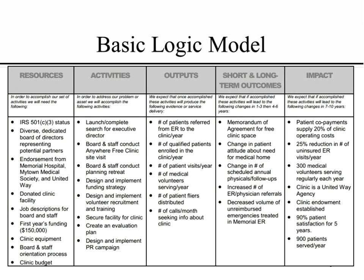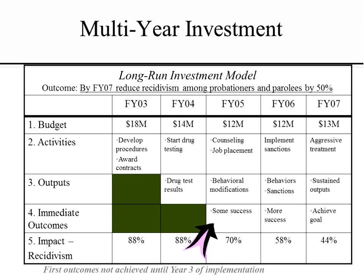Students often gravitate toward a basic logic model, which is really just a table. The downside is it's still a wall of words — not very appealing or exciting — but it works. It's got resources flowing into activities; activities produce outputs; outputs produce short-term and long-term outcomes; and those outcomes ultimately have an impact. You can examine all the different examples in this particular diagram, but appreciate that it's not as visually exciting or appealing as some of the others you're about to see.